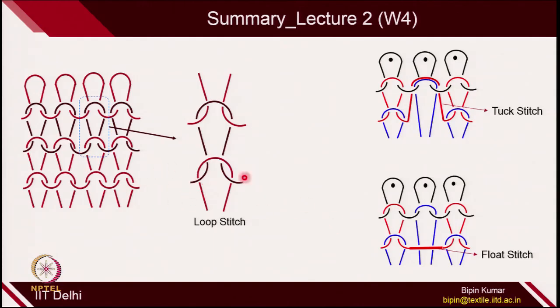A quick revision of stitches from the last class: in knitting, you can control the number of intermeshing points. In the case of loop stitches, you need 3 needles loop where you can create 4 intermeshing points. In tuck stitches, there are 2 intermeshing points missing in the loop. In the case of float, the entire loop by that particular needle is not intermeshing with the bottom loops. So stitches are divided into 3 categories: loop stitch, tuck stitch, and float stitch.